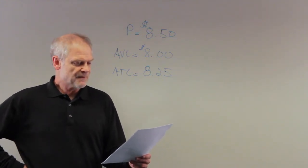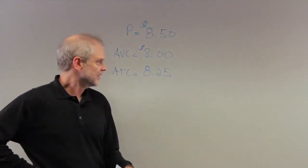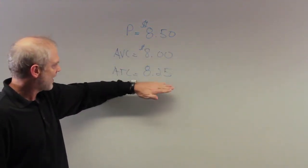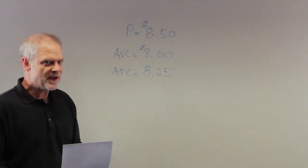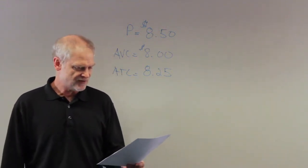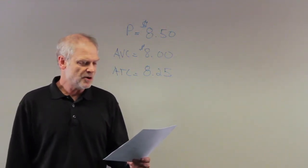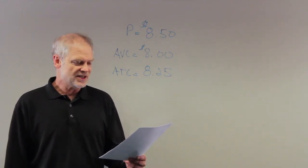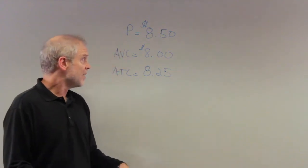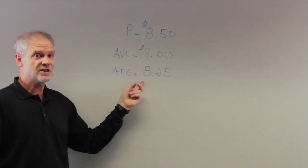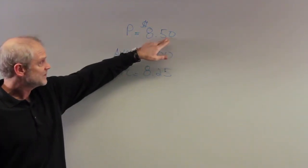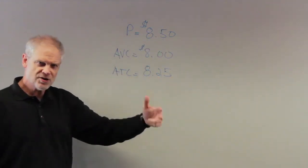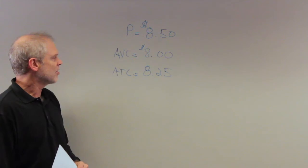Continue to operate in the short run, shut down in the long run. Well, again, she's making money. It exceeds her average total cost here. So she's making above-normal returns. There's no incentive to shut down here. Operate in both the short run and the long run, and then the last one, D, shut down in both short run and long run. Well, she's going to operate both in the short and the long run as best she can. Clearly, at this price, she's covering her cost and making money.